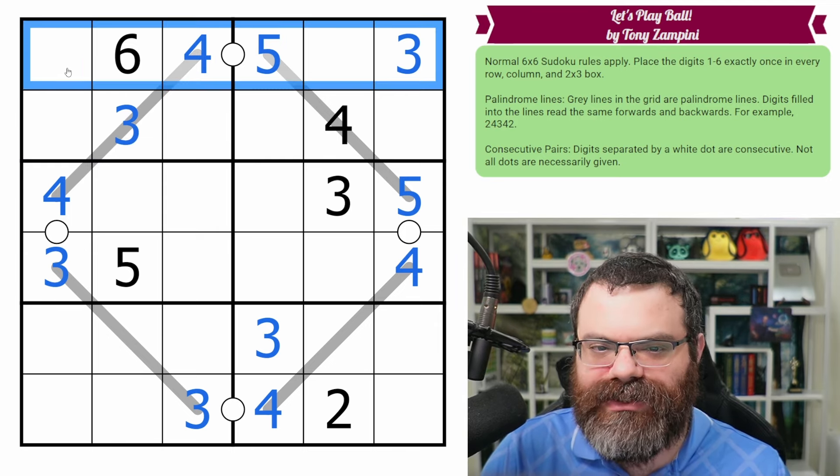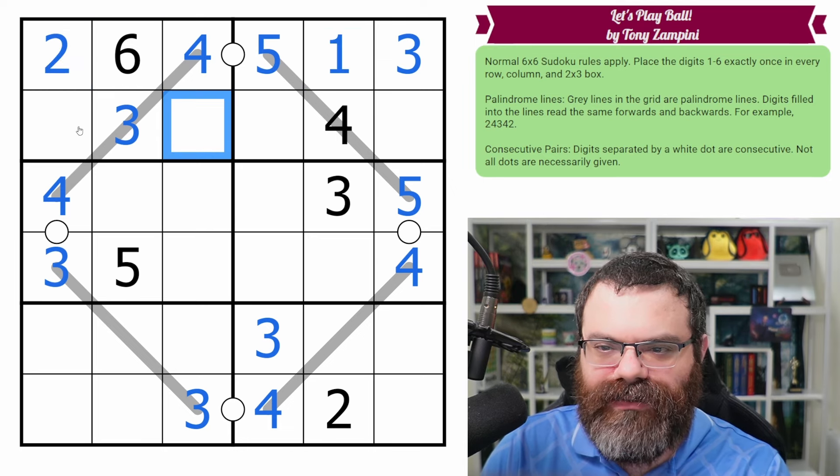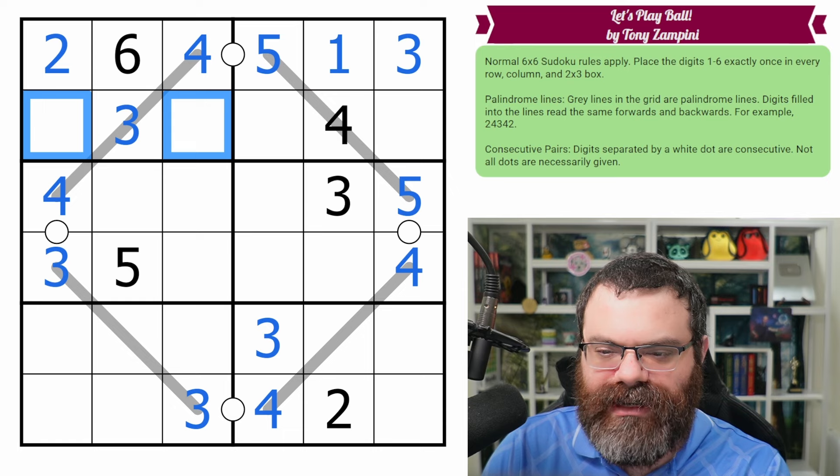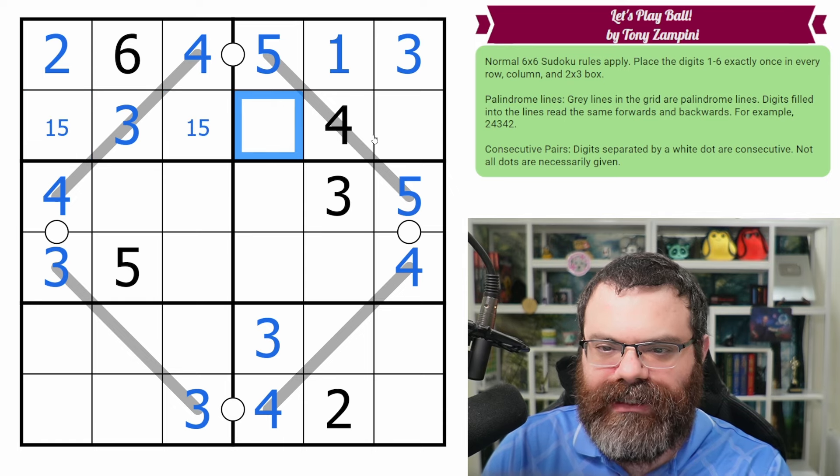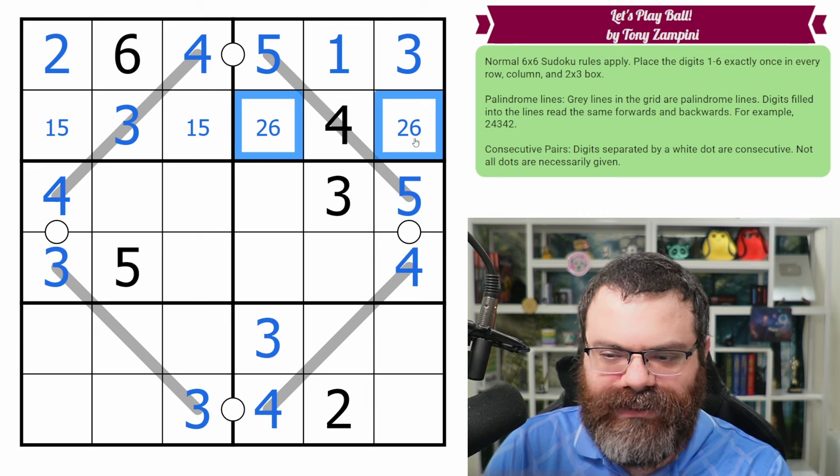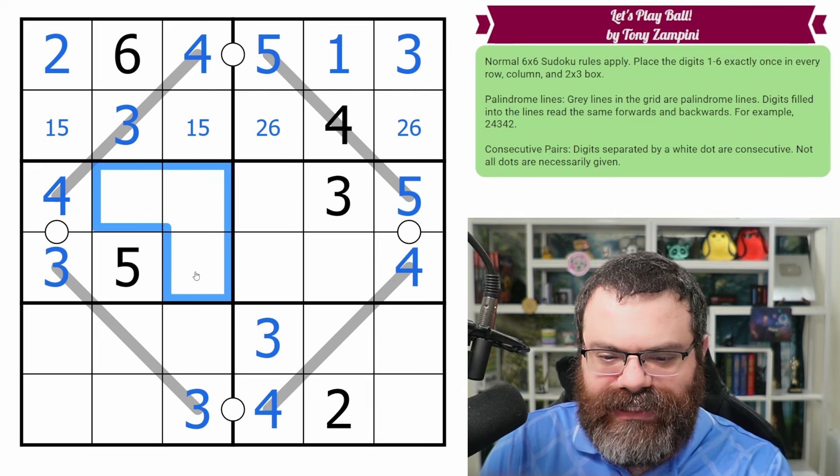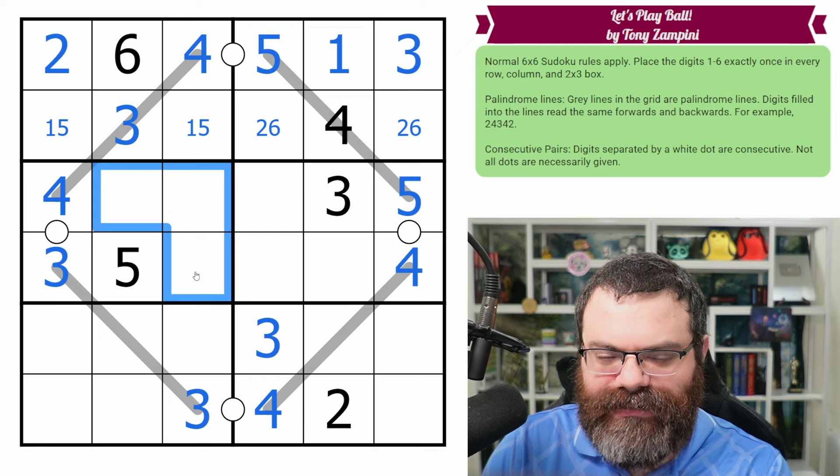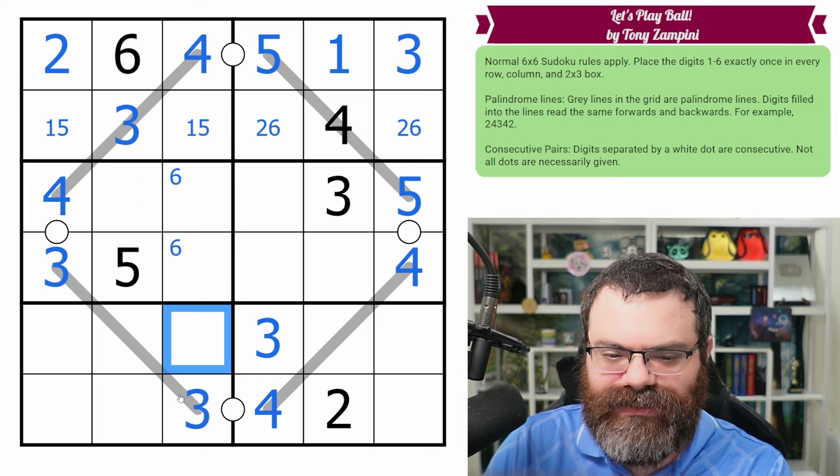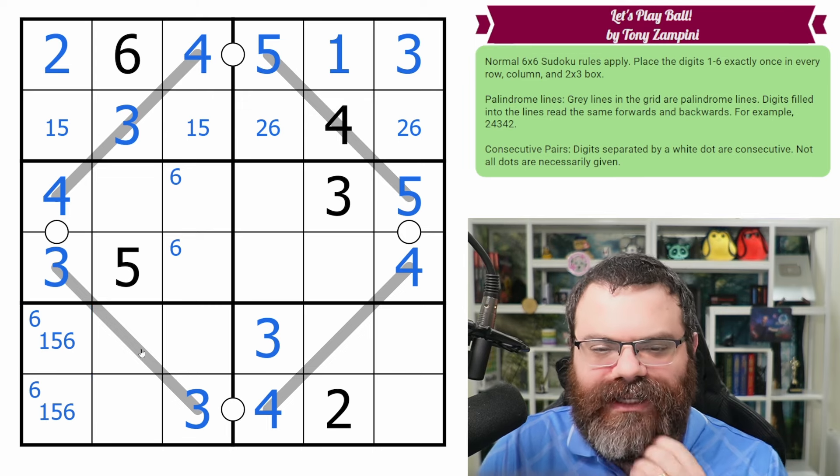So three down here and three in this box goes here. All right. Remember the middle palindromes can be anything. They don't clone anywhere. Okay. So now in this row, we need a two, which can only go here. And then we need a one. That was very helpful. So here we need a one and five, which are not finished. And then here we need a two and six, which are not finished. This box needs a one, two, and six. I don't know anything. Oh, I know - I know this isn't six. So the six goes in one of these two, which does put the six down here. In fact, this is one, five, six.